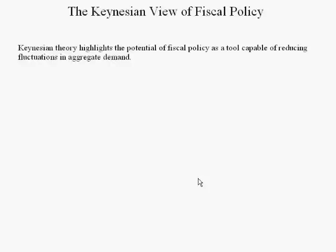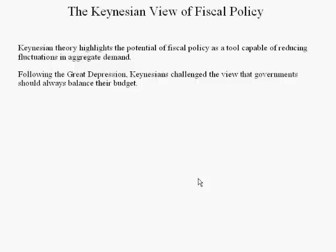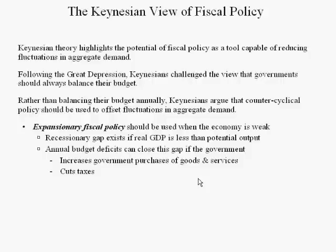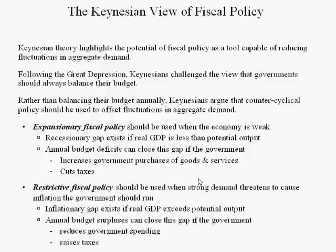The Keynesian view of fiscal policy highlights its potential as a tool capable of reducing fluctuations in aggregate demand. Following the Great Depression, Keynesians challenged the view that governments should always balance their budget. Rather than balancing the budget annually, Keynesians argued that counter-cyclical policy should be used to offset fluctuations in aggregate demand. Expansionary fiscal policy should be used when the economy is weak — when we're in a recessionary gap, where real GDP is less than potential output. Annual budget deficits can close this gap if the government increases purchases of goods and services or cuts taxes.